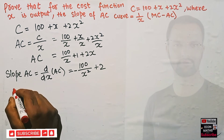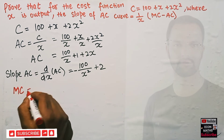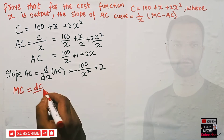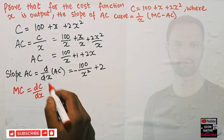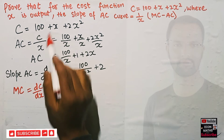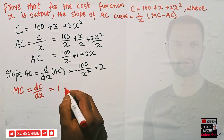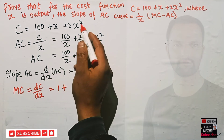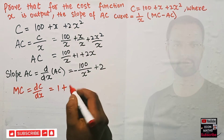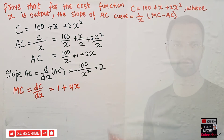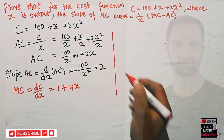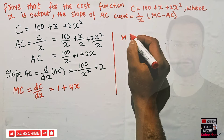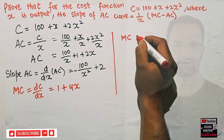Next, we find the marginal cost, which is simply the derivative of the cost function with respect to x. The derivative of the constant 100 is 0, the derivative of x is 1, and the derivative of 2x² is 4x. So marginal cost = 1 + 4x.